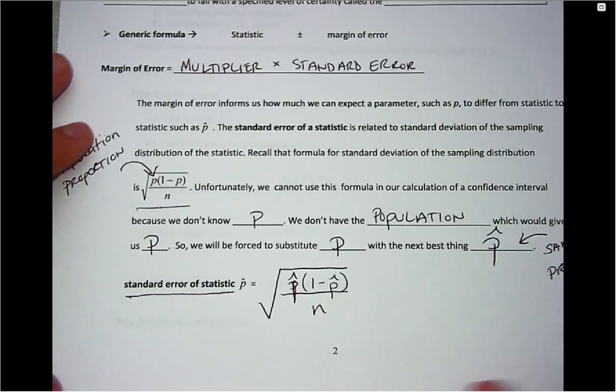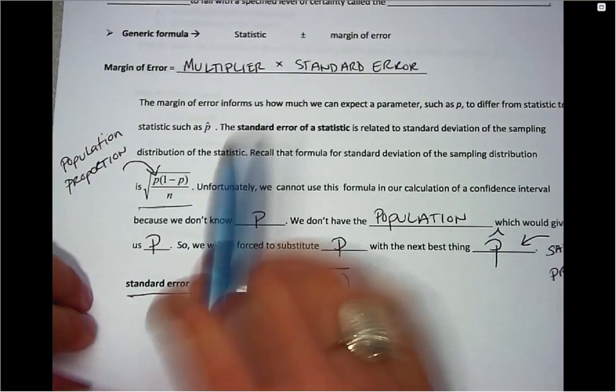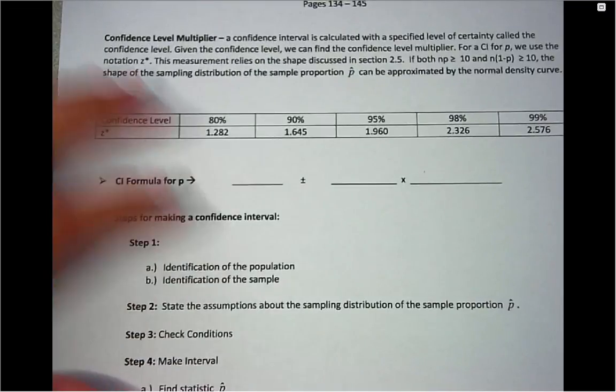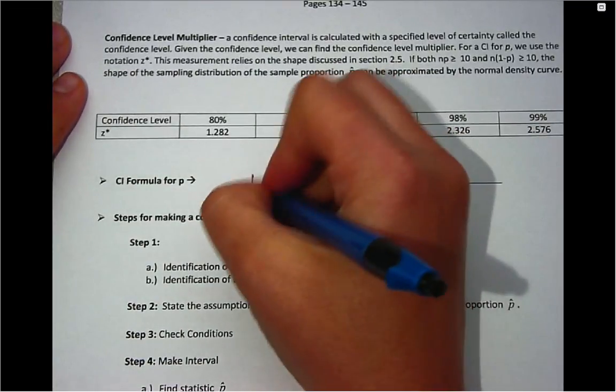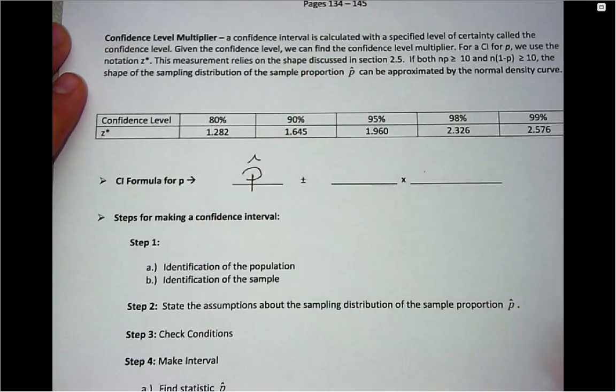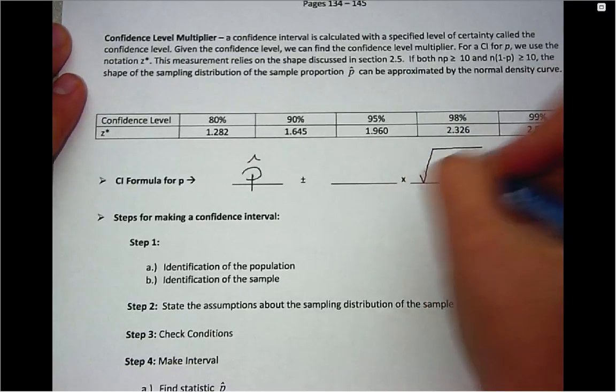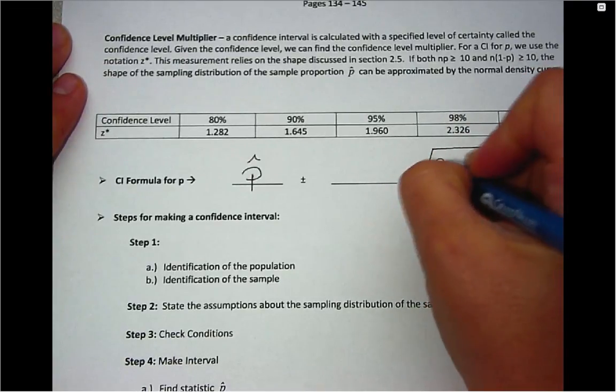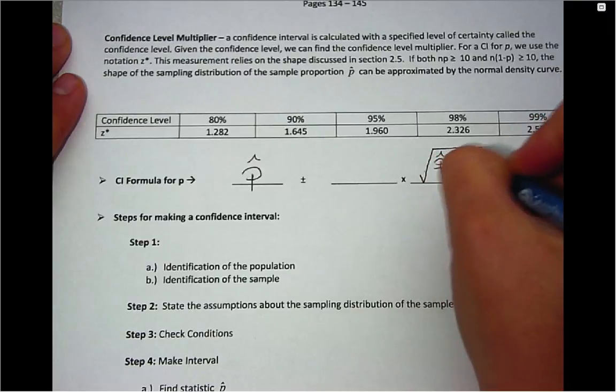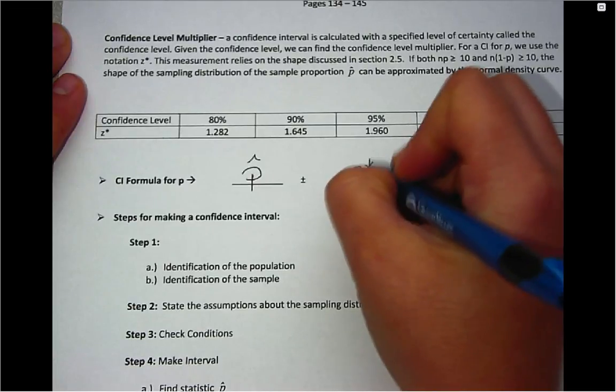That gives us another piece of information for our confidence interval formula. On the next page, we're very close to having it be complete. The statistic that we have right now, if we're calculating a confidence interval for p, is p-hat. We just gave ourselves the formula for standard error, which is p-hat times 1 minus p-hat, all over n. And then we will have a multiplier that's called z star.